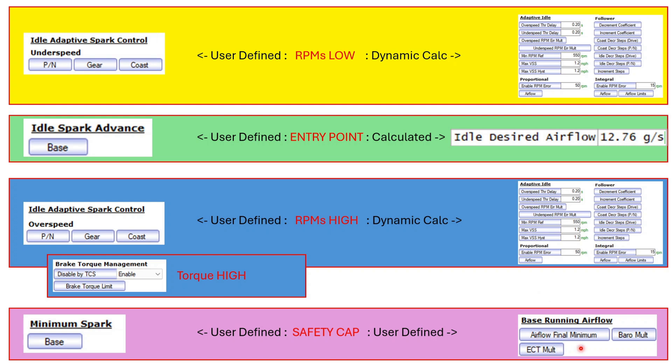And then from there we have this PI controller and so it's kind of bouncing back and forth between here. And then we do have a safety cap down here: base running airflow error flow final minimum. So that's saying no matter what you decide here and no matter what the PI controller tells you to do, there is no way in heck you can ever go lower than this amount of air.